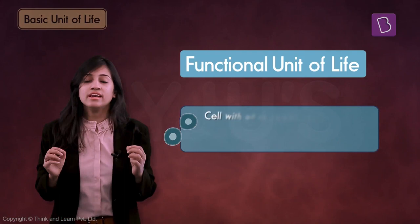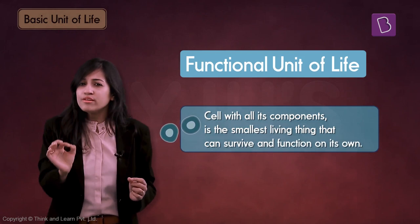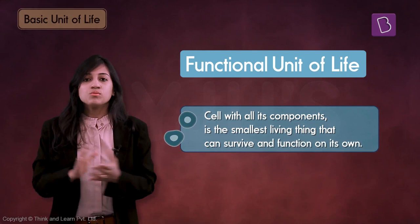When I call a cell a functional unit, it simply means that a cell with all its parts and components is the smallest living being that can survive and function on its own. In other words, it means that the smallest living organism is actually a single-celled organism, also called a unicellular organism.